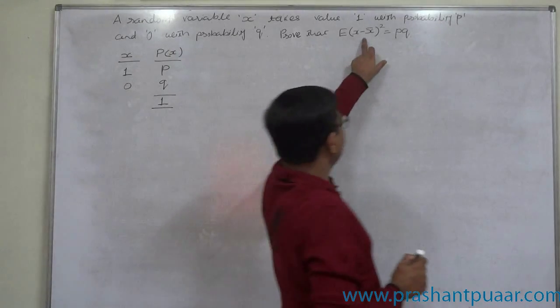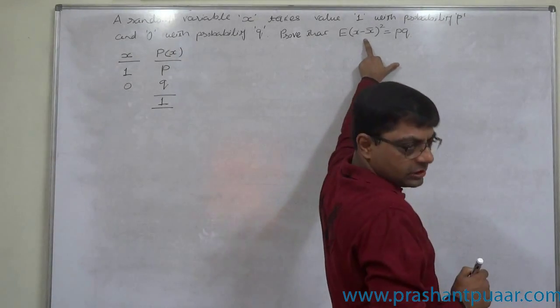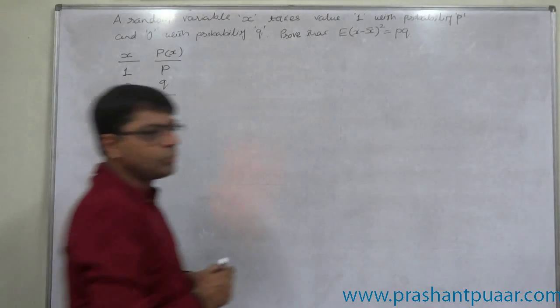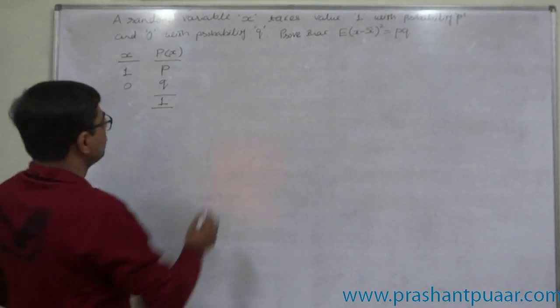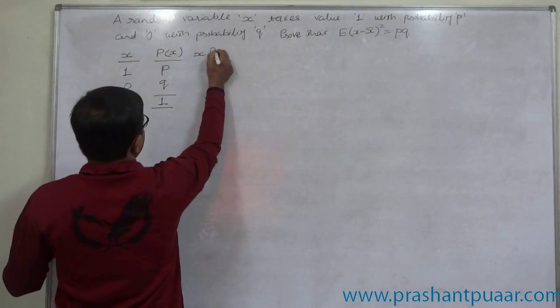We require to calculate E of X minus X bar whole square that means variance. To calculate variance we need two new columns. One is X into P of X.